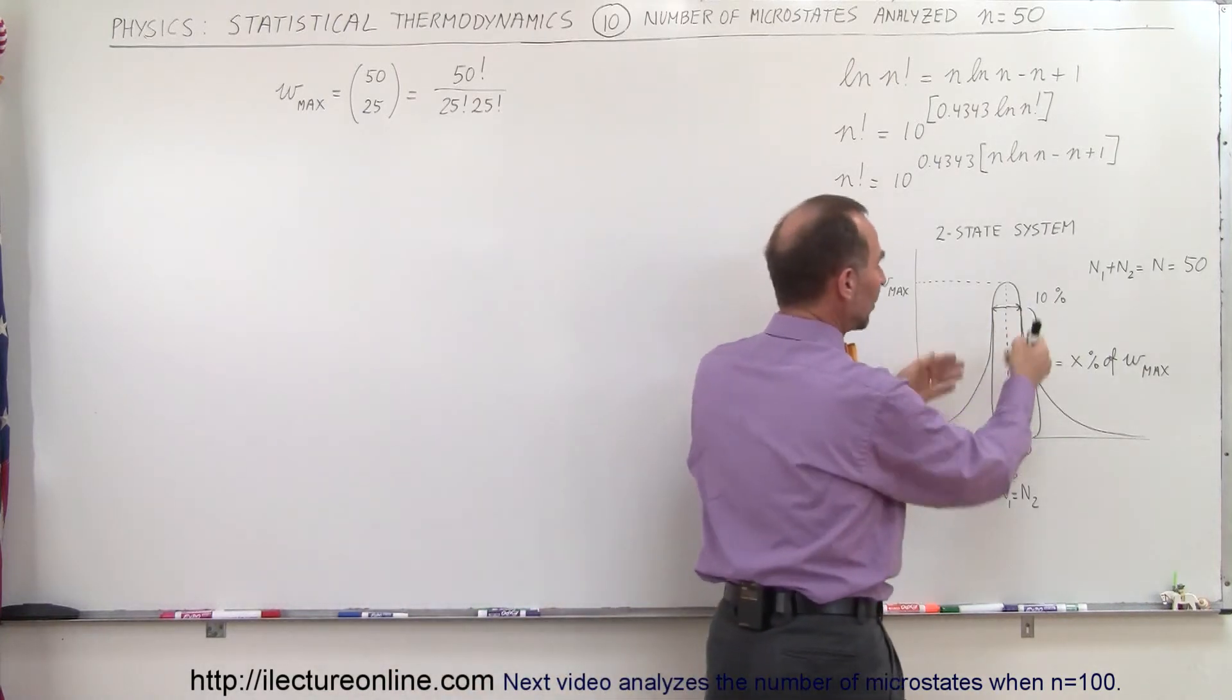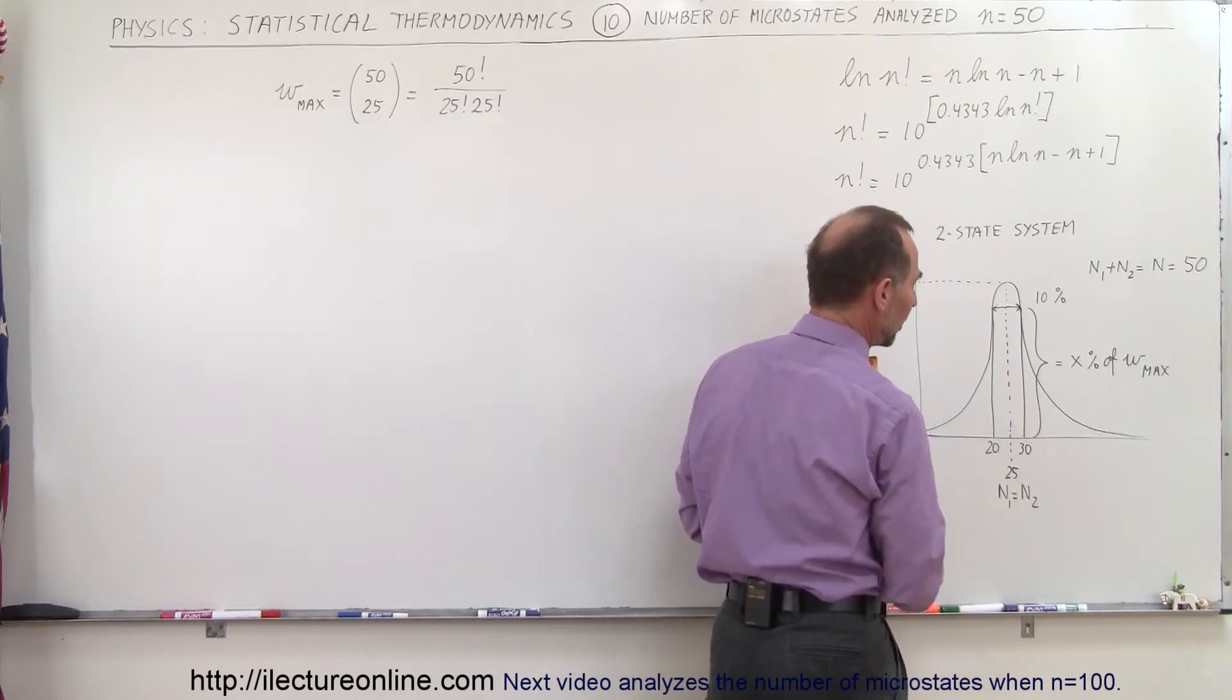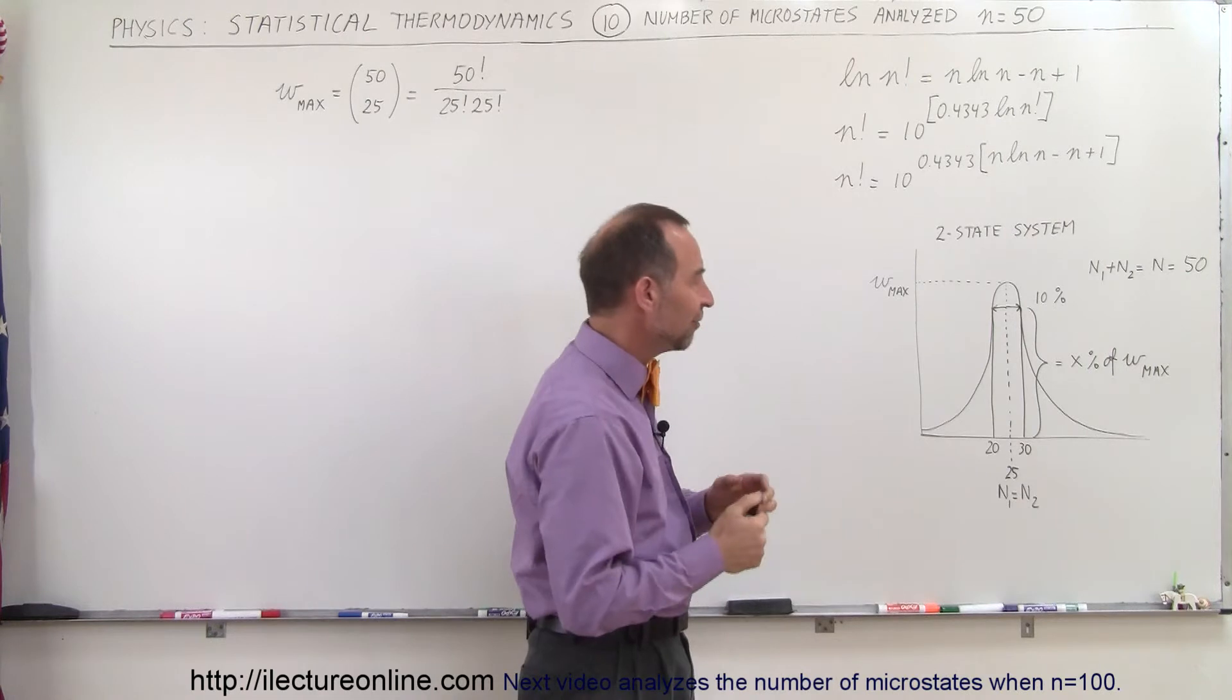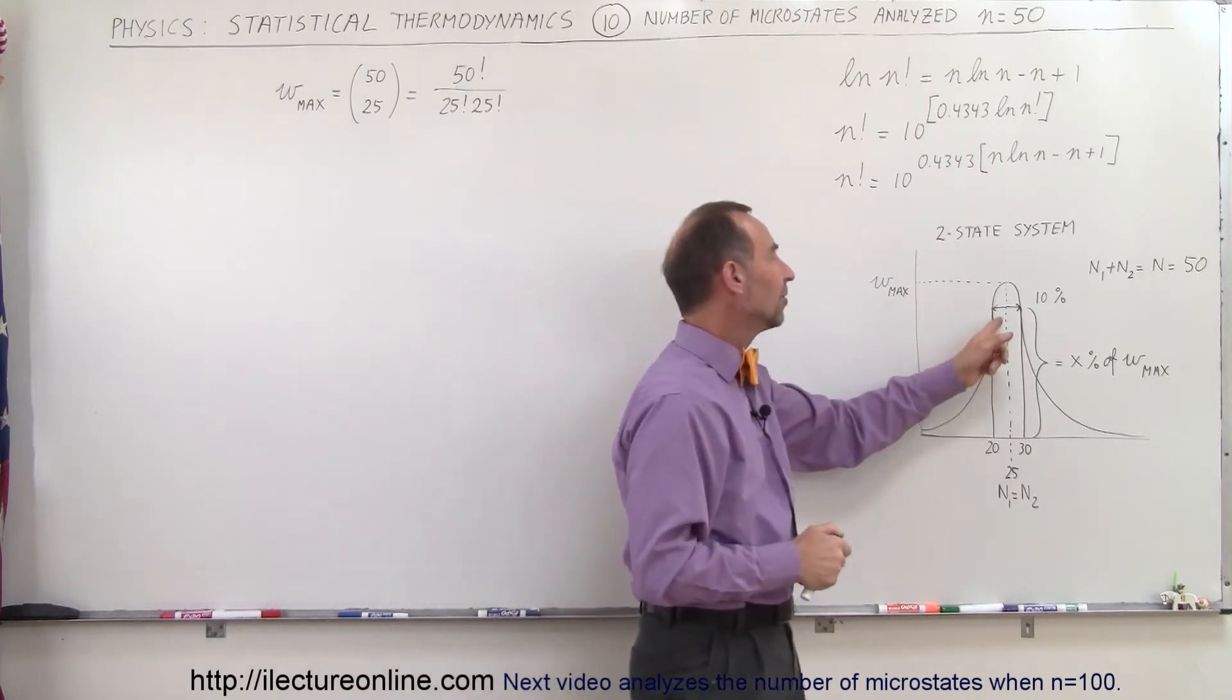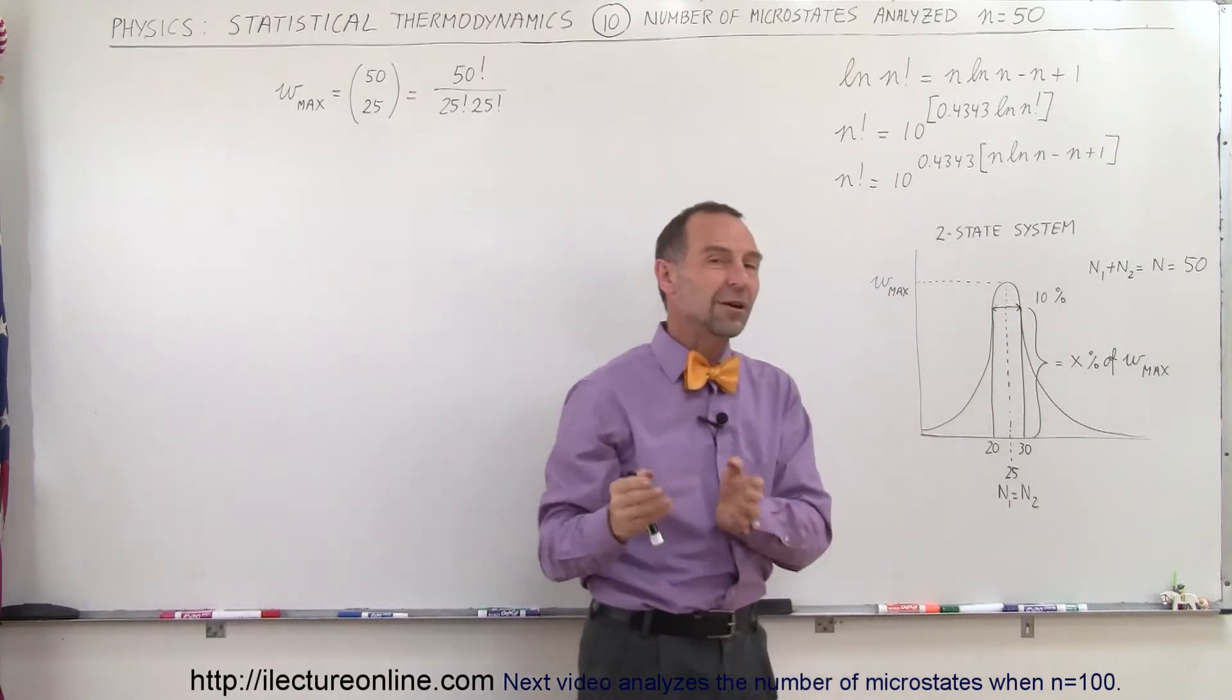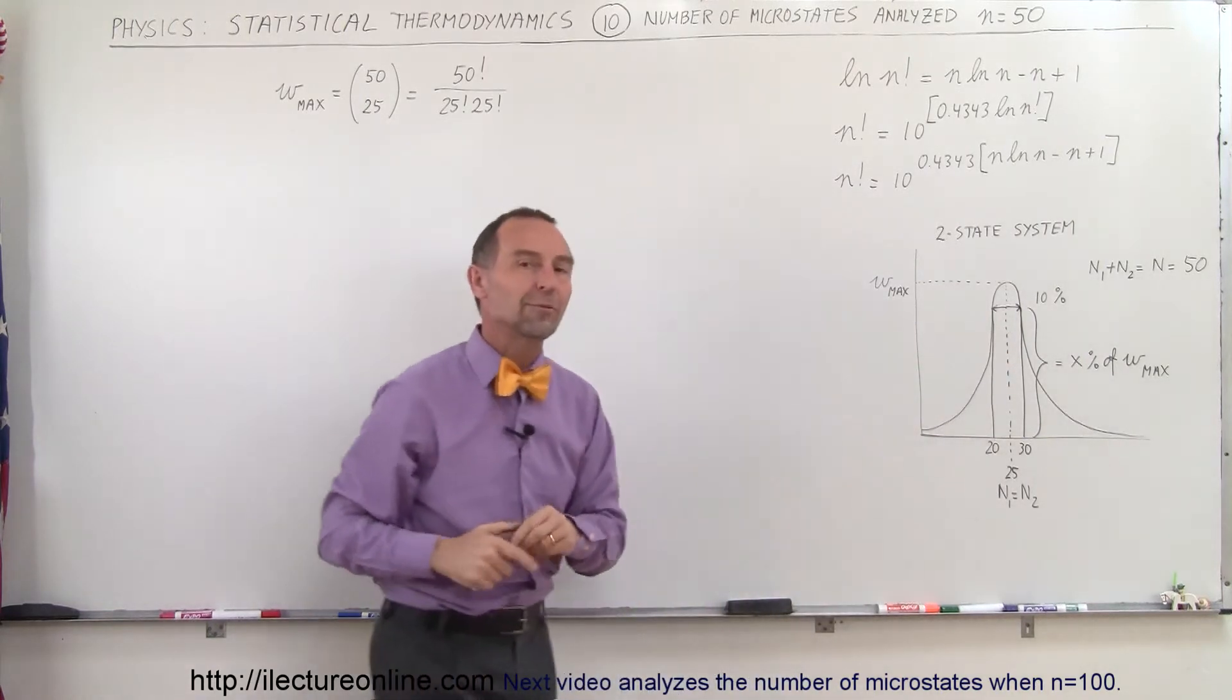And of course, when we go 10% out, in this case, that would be 20, from 25 to 20, from 25 to 30, because 10% of 50 is 5. That means we will be able to figure out what the number of microstates will be for 10% out from the maximum relative to the max number of microstates.